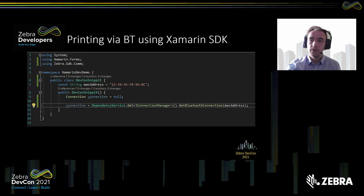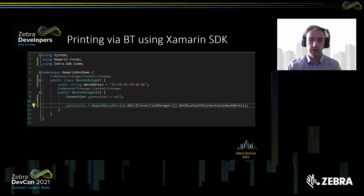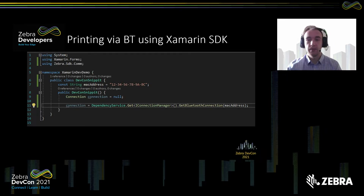Next, I'm going to go over one example for how we use our Xamarin SDK — specifically printing over Bluetooth. Xamarin supports other connection types such as WLAN, USB, and others. You can review the full list of supported connections and platform restrictions inside the Zebra LinkOS multi-platform SDK for Xamarin tech docs. The link will also be included.